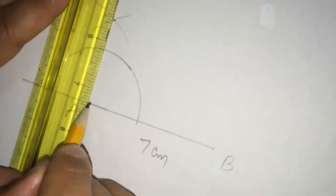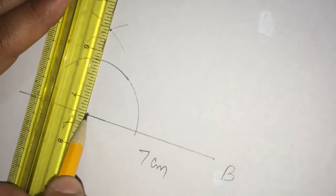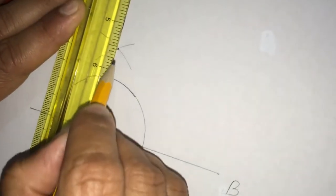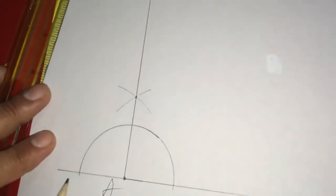That point, you join with the given point A here. So, you produce, join, you will get a line. This line is definitely perpendicular to the given line AB.